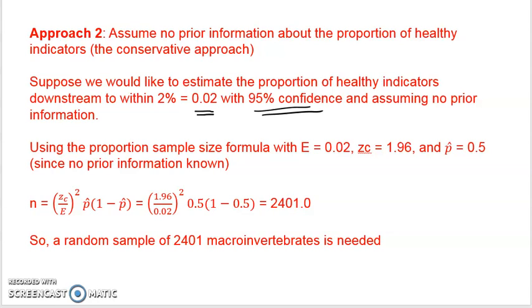Using the proportion sample size formula, which is on your formula sheet, with E, the margin of error being 0.02, the critical z value for 95% is 1.96...